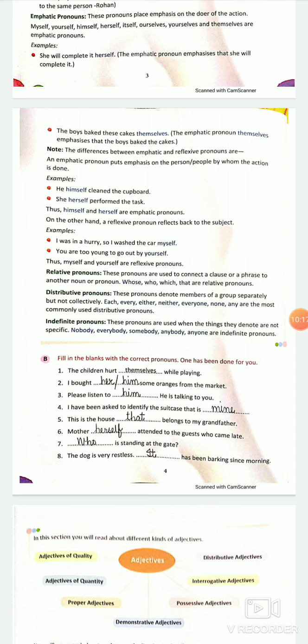Distributive pronouns are the words which we use to refer to individuals present in one group. For example, each of you will get a candy. Each of you, I am referring to a group, but I am talking to individuals, each of you. So the words like each, every, either, neither, everyone, none, anyone are the most commonly used distributive pronouns.